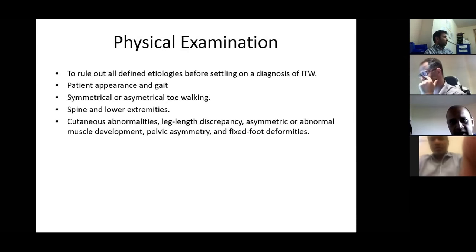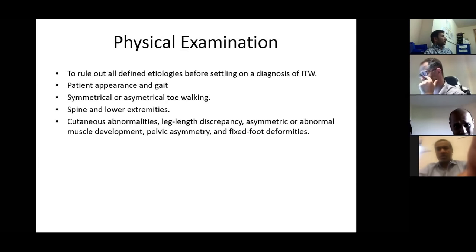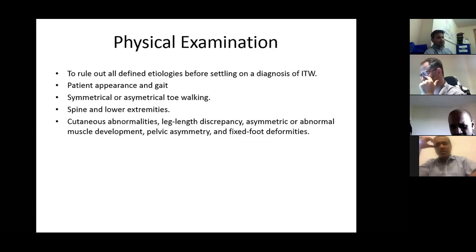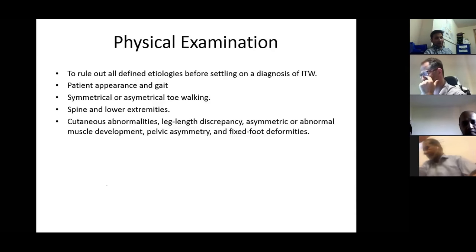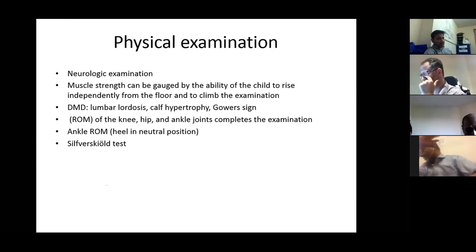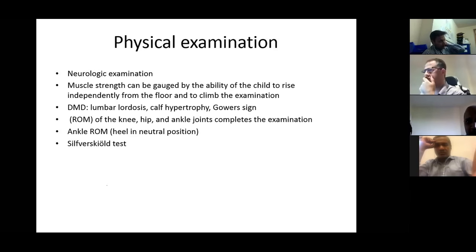Physical examination should focus on ruling out all defined etiologies before settling on a diagnosis of idiopathic toe walking. General examination should assess patient appearance, gait, and whether the toe walking is symmetrical or asymmetrical, along with examination of the spine and lower extremities. Look for cutaneous abnormalities of the spine, leg length discrepancy, asymmetry, abnormal muscle development, pelvic asymmetry, or fixed foot deformities. A thorough neurological examination and muscle strength assessment — by gauging the child's ability to rise from the floor or climb an examination couch — is essential.